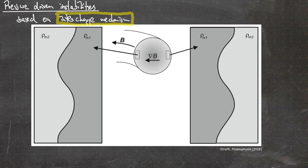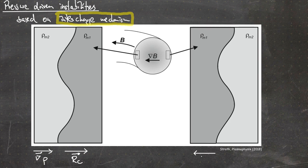In the center you see a poloidal cross-section. On the left, on the high field side, the pressure gradient points to the right and the curvature radius also points to the right. On the low field side, the pressure gradient points to the left and the curvature radius points in the same direction — so pressure gradient and curvature radius point in opposite directions. You might remember from plasma physics the curvature drift.